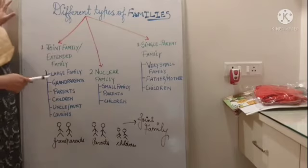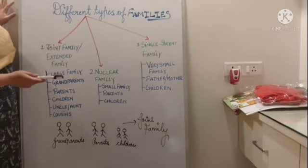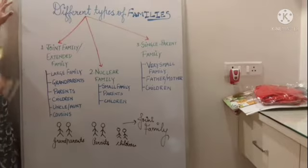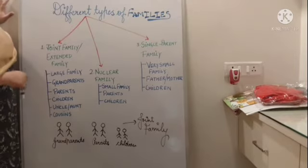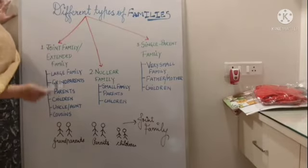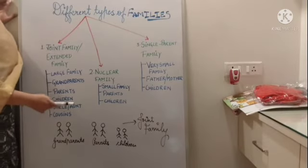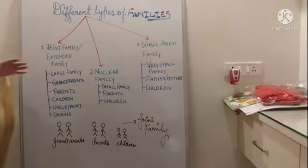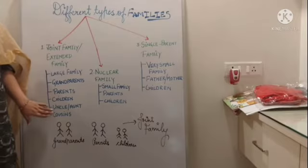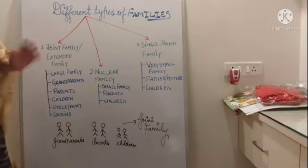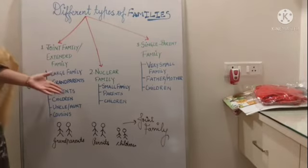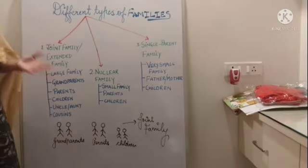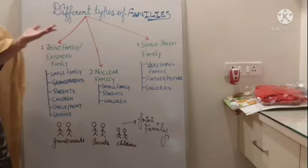Starting with a joint family. Joint family is also known as a large family. In such types of families, grandparents, parents, children, uncle, aunt and cousins live together under the same house. No matter if your cousins, uncle and aunt live with you — but if your grandparents, parents and children live in the same house, they basically form a joint family.